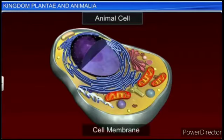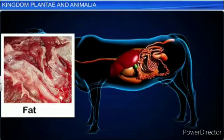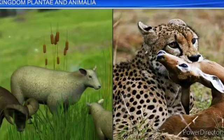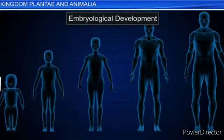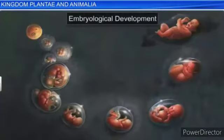Kingdom Animalia is characterized by heterotrophic, eukaryotic organisms that are multicellular and whose cells lack cell walls — a cell membrane is present instead. They directly or indirectly depend on plants for food, digest food in an internal cavity, and store food reserves as glycogen or fat. Their mode of nutrition is holozoic, by ingestion of food. They follow a definite growth pattern and grow into adults with a definite shape and size. Higher forms show elaborate sensory and neuromotor mechanisms, and most are capable of locomotion.